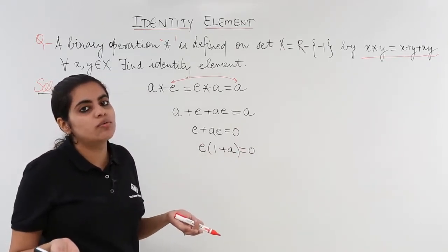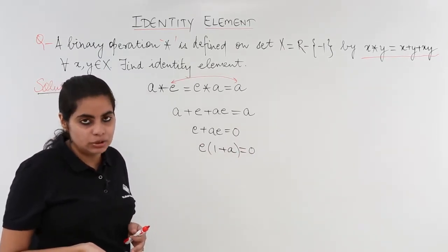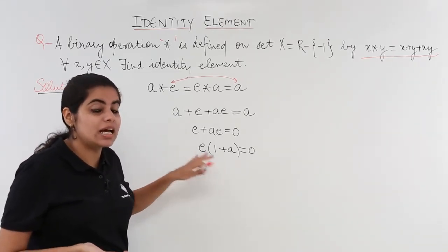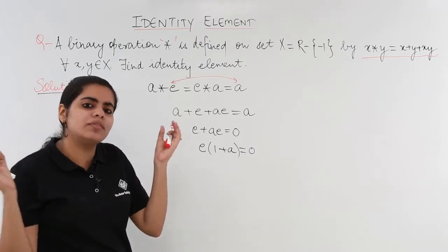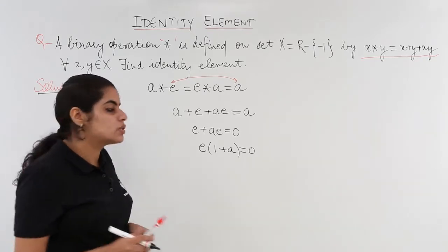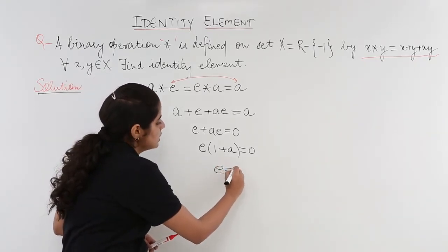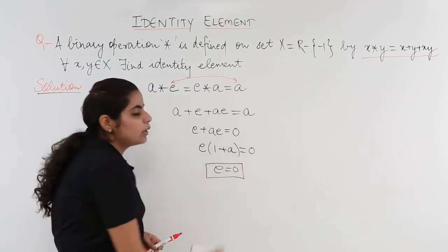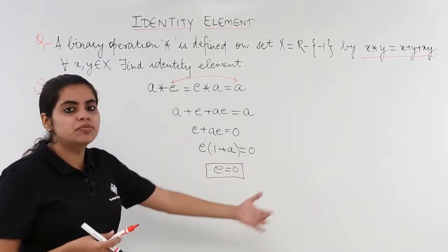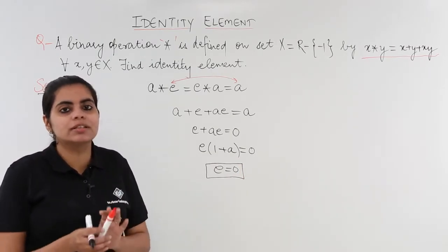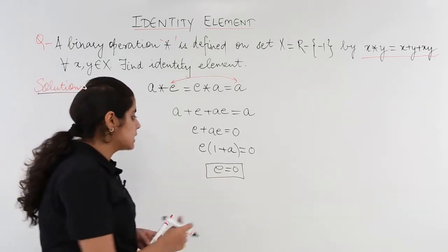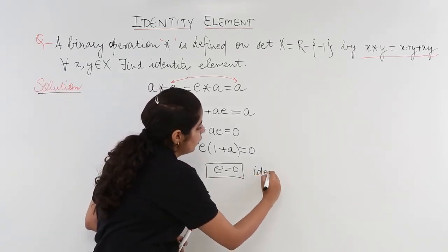Now you have to find the value of e. So what is e from these brackets? I know that if the product of any two things is 0, either both are 0 or one of them is 0. So I just write e equals 0. And what about 1 plus a? 1 plus a equals 0 means a equals minus 1. That is a different story. We do not have to consider whether that is valid or not. For us, we were supposed to find e and this e is the identity element for the given question.